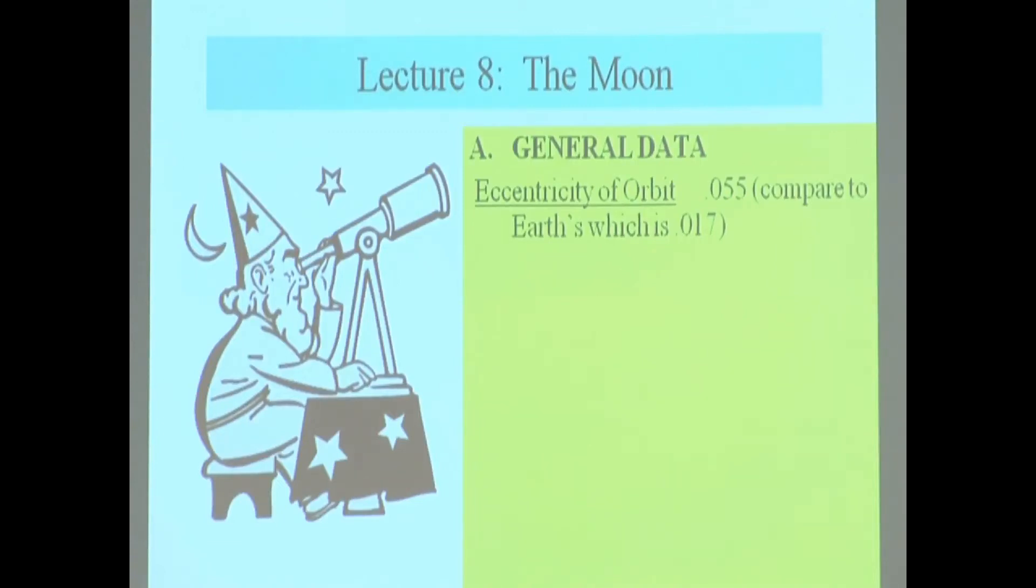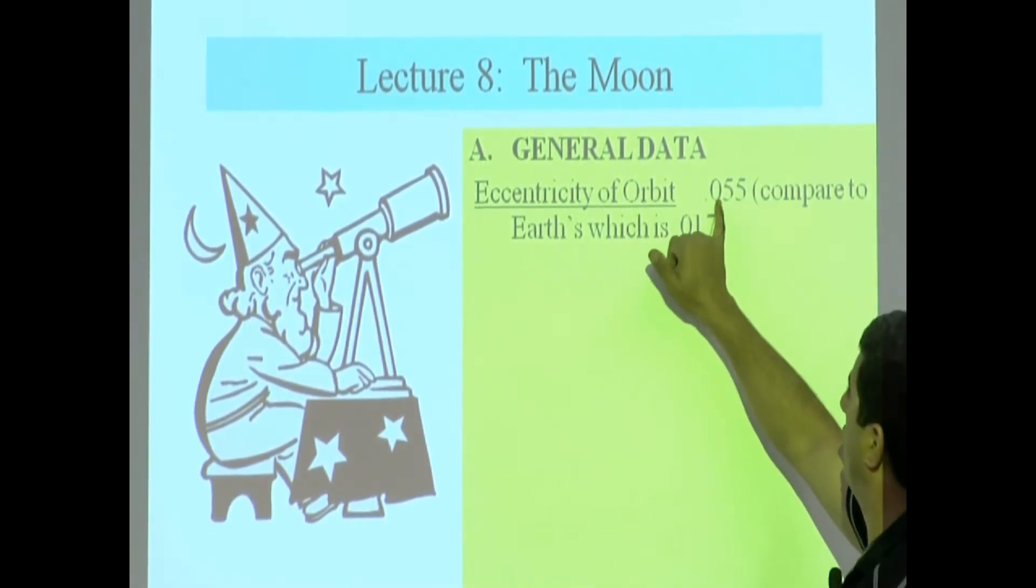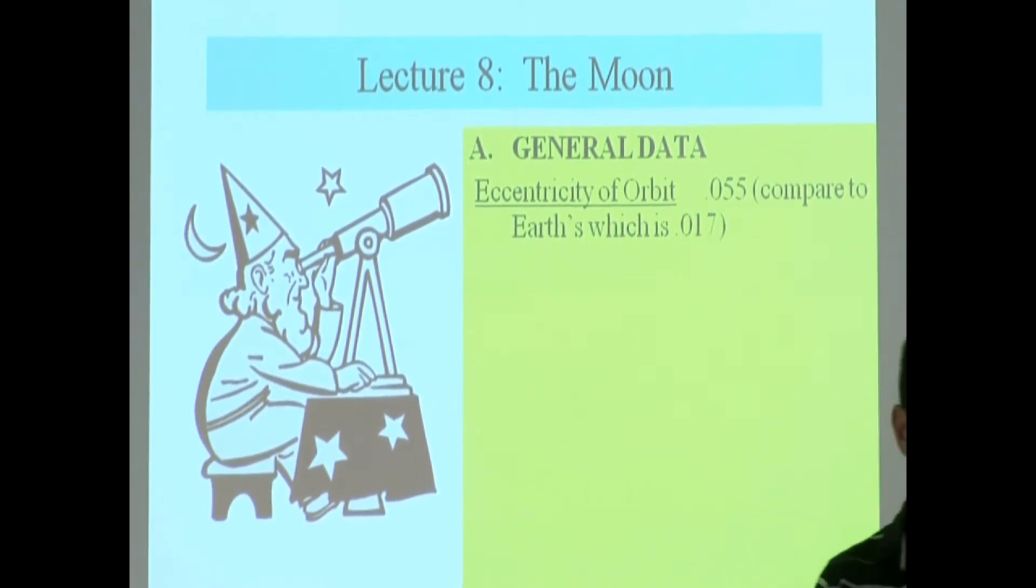You have similar kinds of data about the moon as about the Earth. What is the eccentricity of the orbit of the moon? 0.055. Again, remember how I said compare things to the Earth so we can have a reference frame. Is the moon's orbit more elliptical or is it less elliptical than the Earth? Compare 0.055 to 0.017.